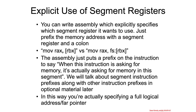Beyond the implicit usage of segment registers, you can actually have explicit usage. So if you had a move from the memory pointed to by RBX into RAX, you can explicitly move from the data pointed to by a logical address — a far pointer. So instead of a normal near pointer, you'd use something like FS:RBX into RAX.